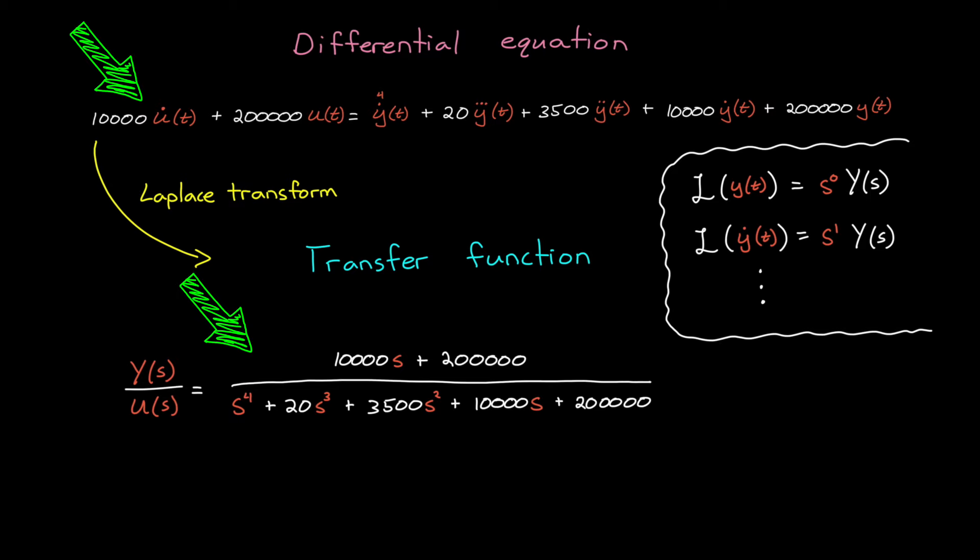These two models capture the same system dynamics. However, with a transfer function, we describe the system as a function of s instead of a function of time. And s is a complex variable, sigma plus j omega, where omega relates to the frequency of a signal, and sigma relates to the exponential growth or decay of a signal.